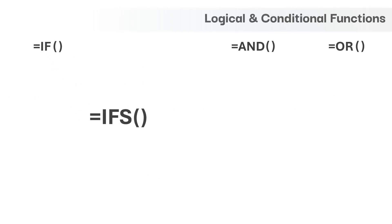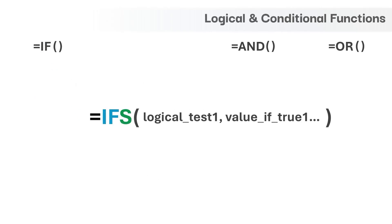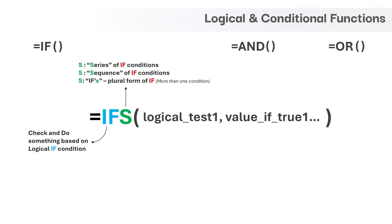The next function is IFS and it has two arguments. Let's try to break it down. The first is the name IF and its meaning is the same as before — to check and to do something based upon a logical condition. The next is the letter S, and similar to SUMIFS and COUNTIFS functions, here S stands for a series of IF conditions, a sequence of IF conditions, or the plural form of IF condition.